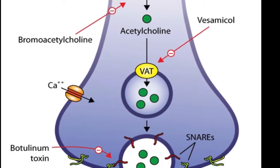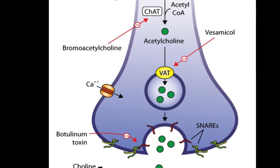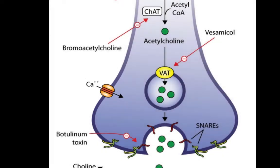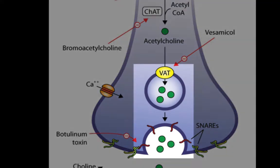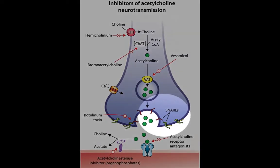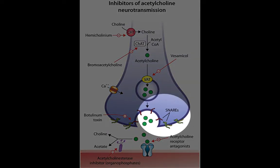Once an action potential arrives at the nerve terminal, it results in calcium entrance. This then induces adhesion of acetylcholine vesicles to the presynaptic terminal membrane. Here, the SNARE protein complex participates in exocytosis of the vesicles, thus releasing acetylcholine.